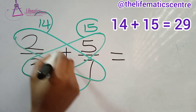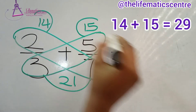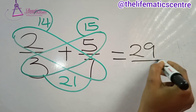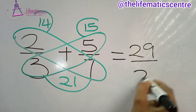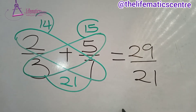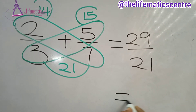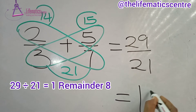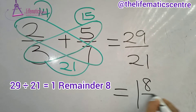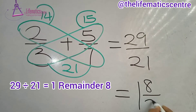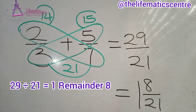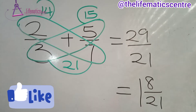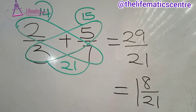14 plus 15 is 29, all over 21. Since 29 is larger than 21, we convert: there is 1 twenty-one in 29, with a remainder of 8. So the answer is 1 and 8 over 21.